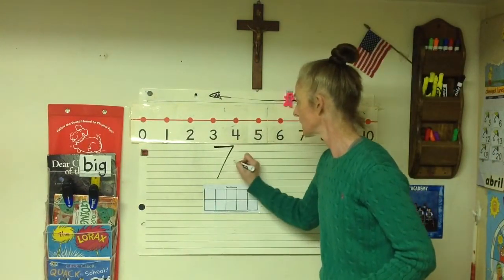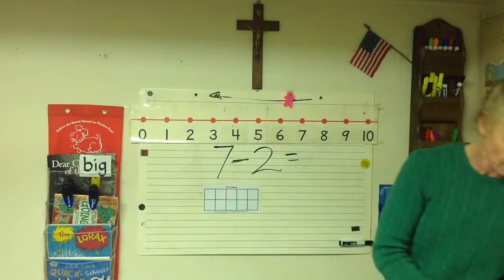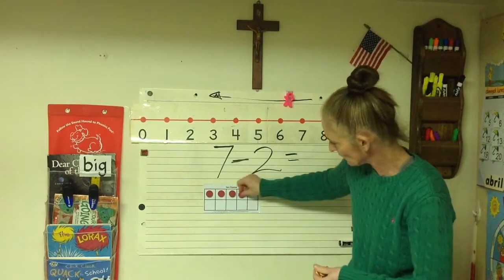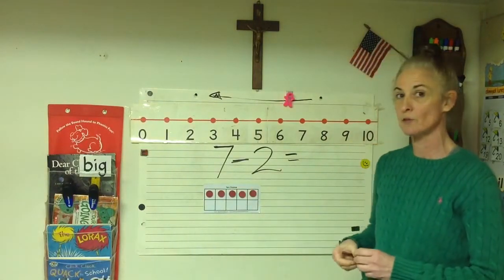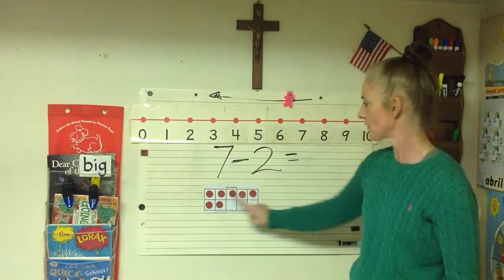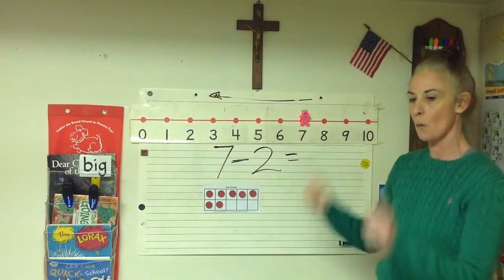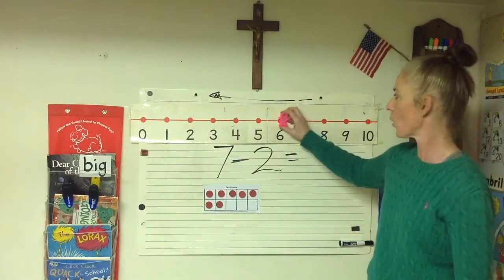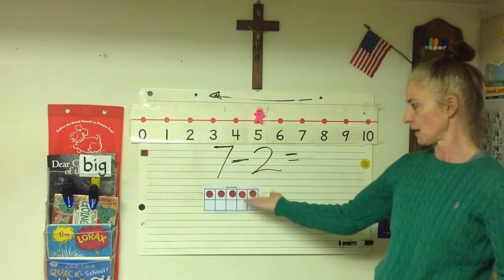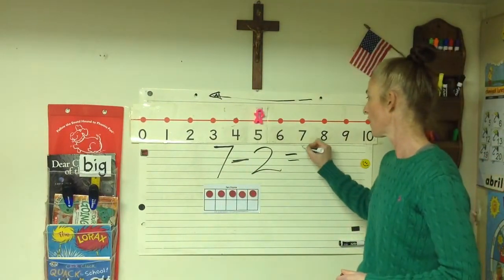Seven take away two equals. I'll fill my ten frame so you can see — we need to start with seven. We have five, six, seven. We want to take away minus two, so we're on seven. Subtract, go back two steps: one, two. We landed on five. I'm going to take two away; our ten frame has five. So seven minus two equals five.